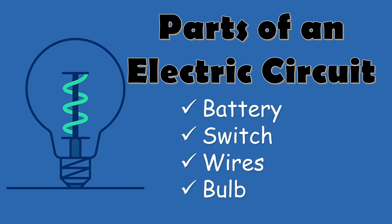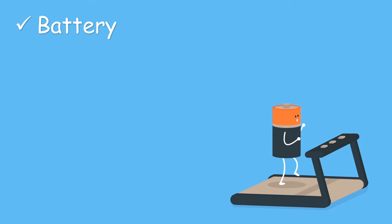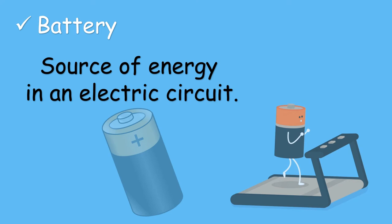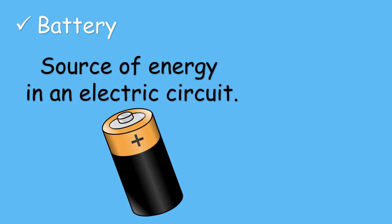First, we have the battery. It is the source of energy in an electric circuit. When the positive and negative parts of the battery are connected properly to the other parts of the electric circuit, an electric current will flow through the electric circuit producing light and heat.